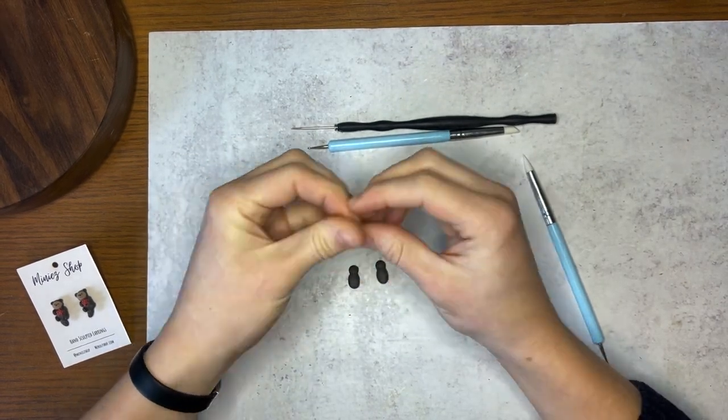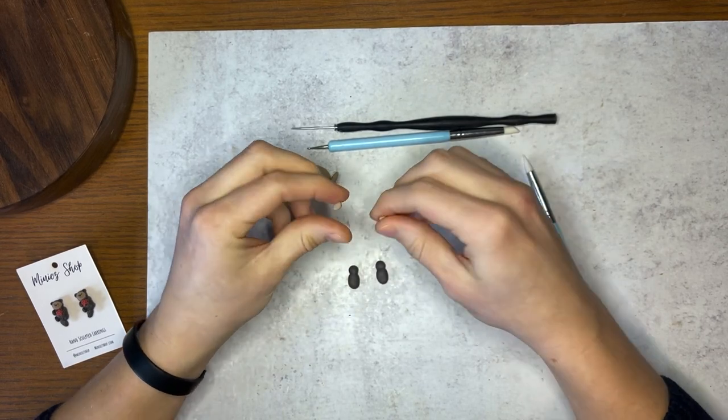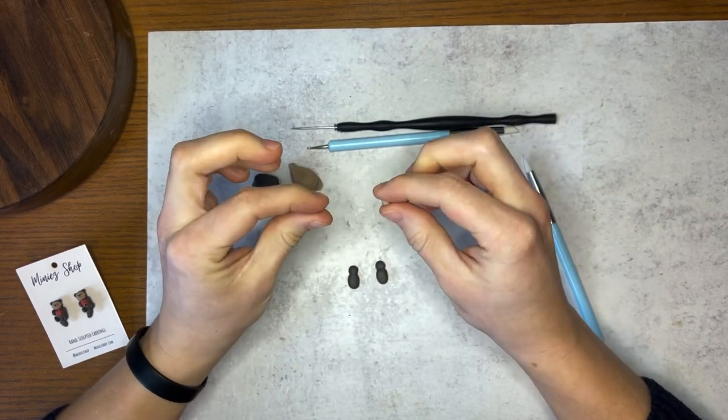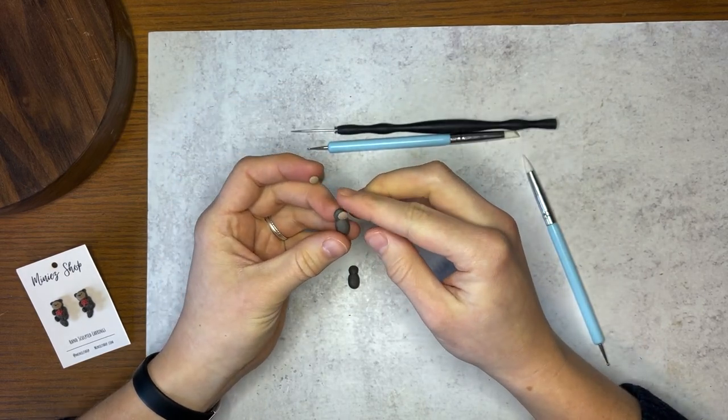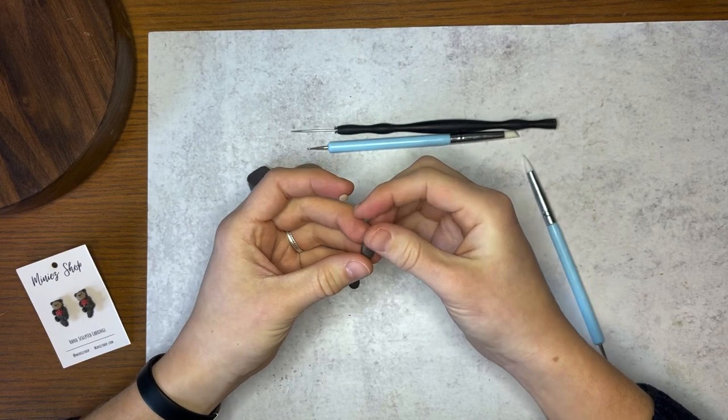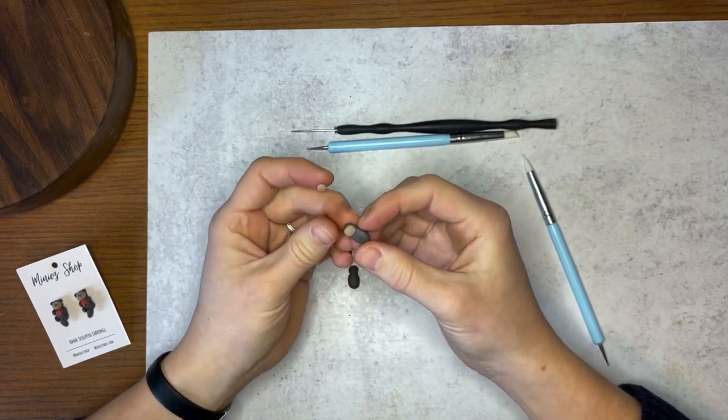And then we'll take some of our light brown clay, warm it up, and we will split it into two balls, about the same size as we took for the head. You can roll them into balls again and tap them. Set the light brown onto the dark brown head portion, and tap it around if it's the size you would like it, leaving a little bit of dark brown clay visible. And repeat on the other one.